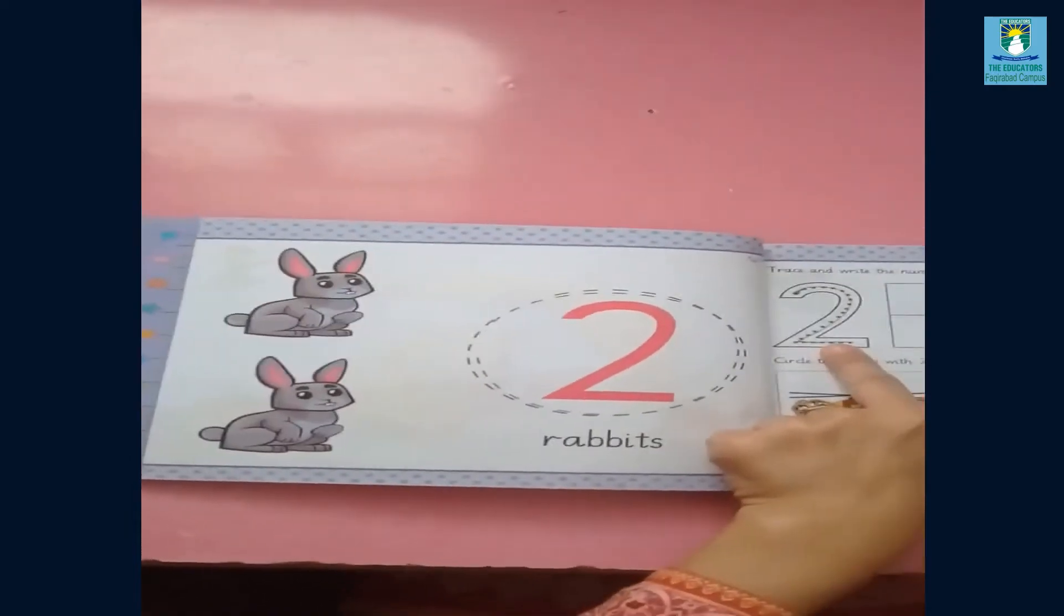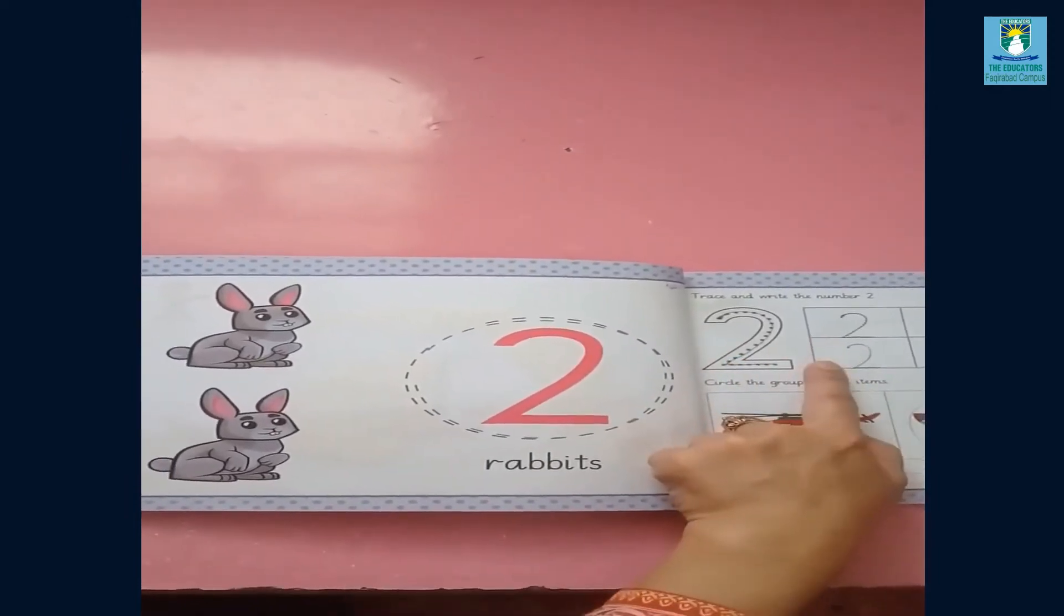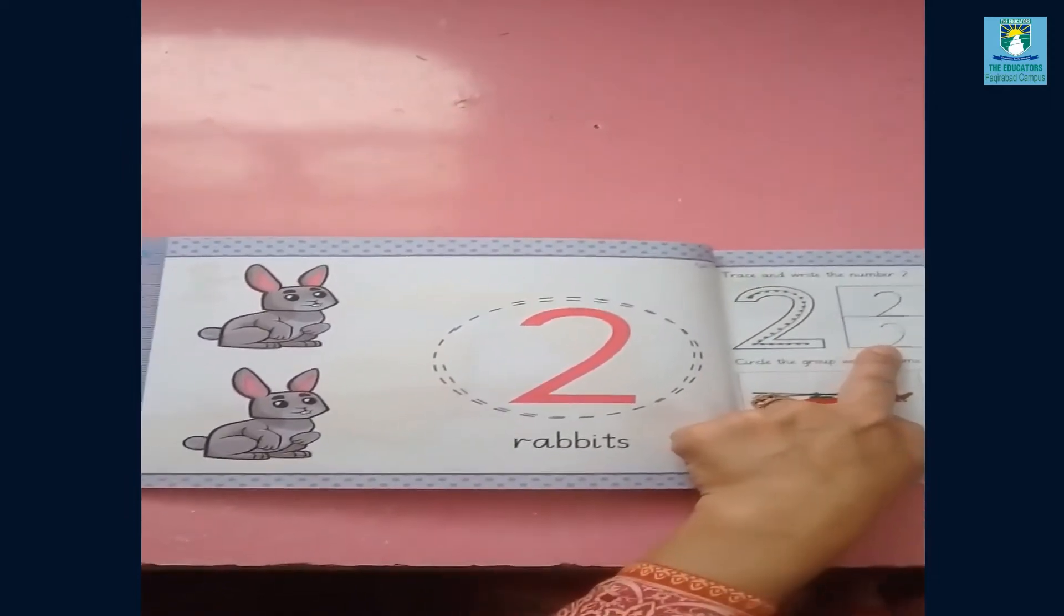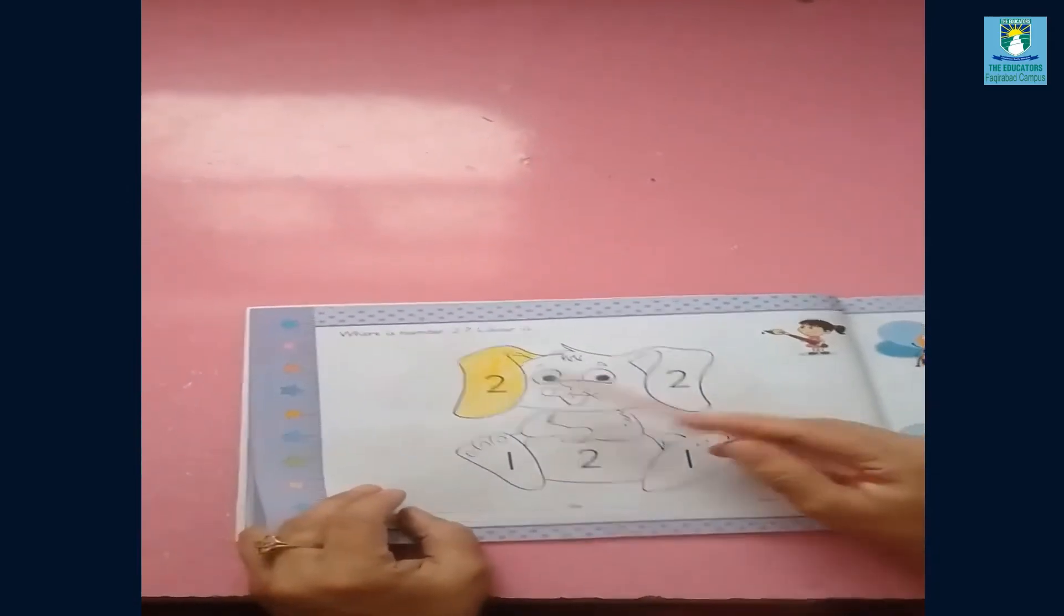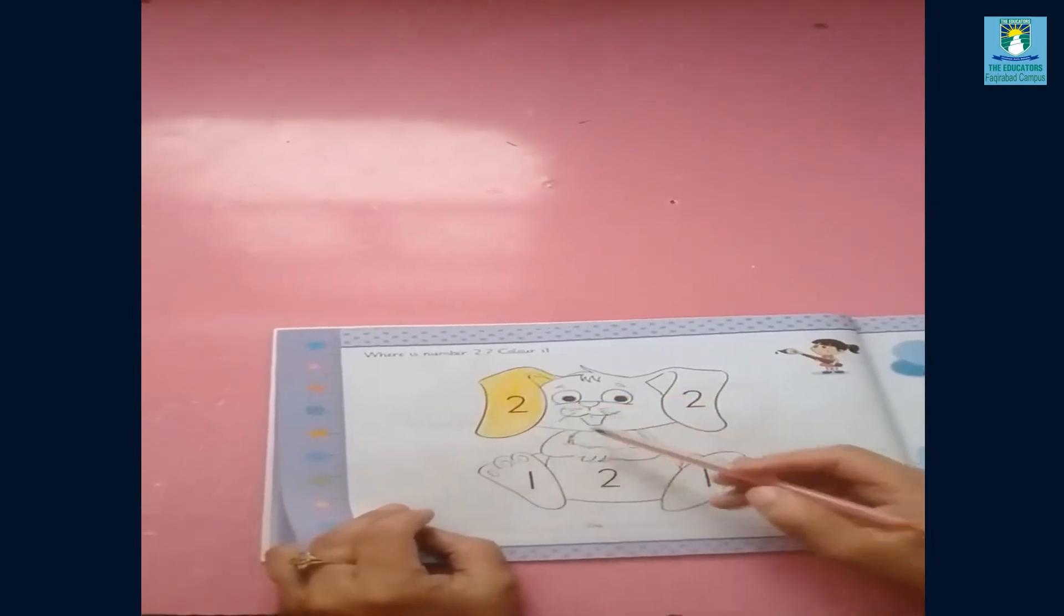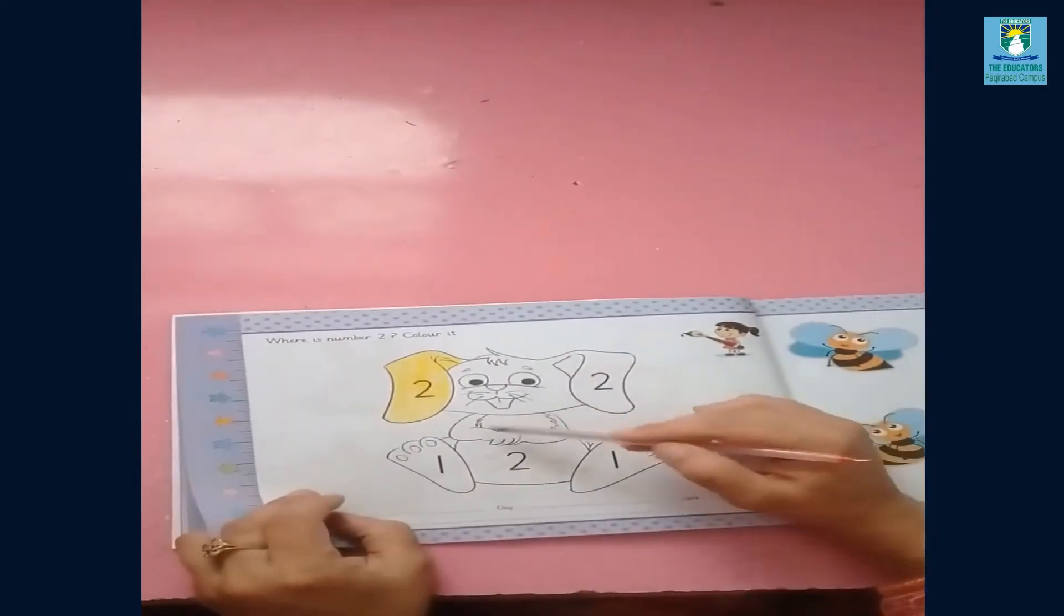I will summarize the previous lecture. We have written the number two. So now what we will do today? We will do the coloring. Where is number two? Color it.